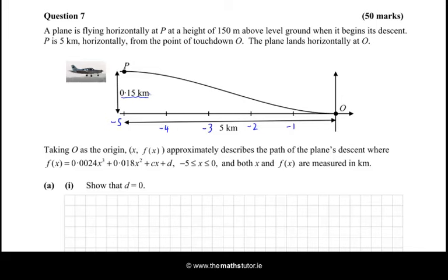Well, to show that d is 0, we could just substitute 0 in because we can see that when x is 0, f(0) is 0. So let's sub it in and we get 0.0024 times 0 cubed plus 0.018 times 0 squared plus c times 0 plus d is 0, and that implies that d is 0 because all of the other terms will disappear.